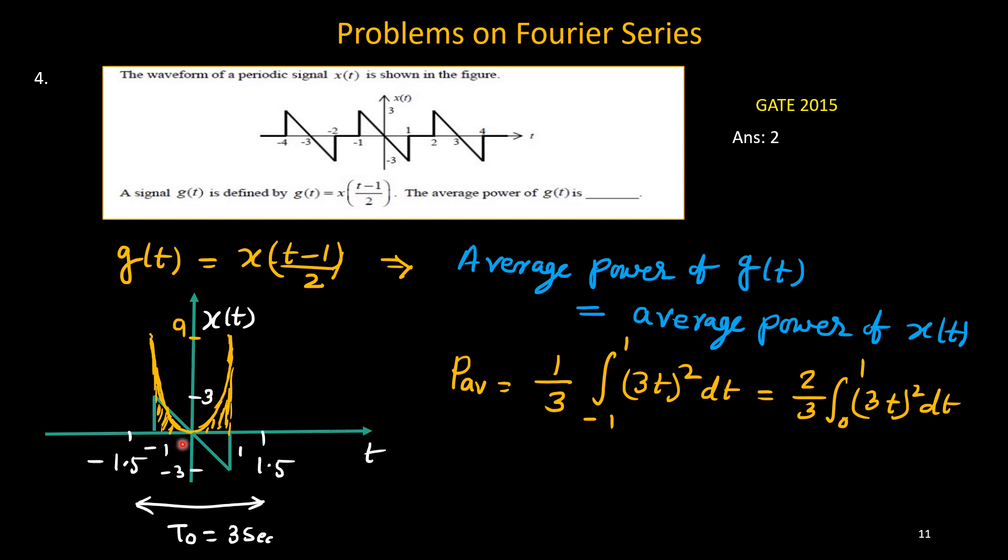So you see minus 1 to 0, the shape, and 0 to plus 1, the shape is same. So area will be same. Just we can multiply 2 and we can consider only one side, 0 to 1. So now this 3 squared, I will take outside. And t squared dt, integration is t cubed upon 3. And lower limit is 0, upper limit is 1. If I put these things, then 2 upon 3, it is 9, it is 1 third. So if you simplify it, you will get 2. So average power of x(t) is 2. Thus average power of g(t) is also 2. So answer is 2. So it is solved.